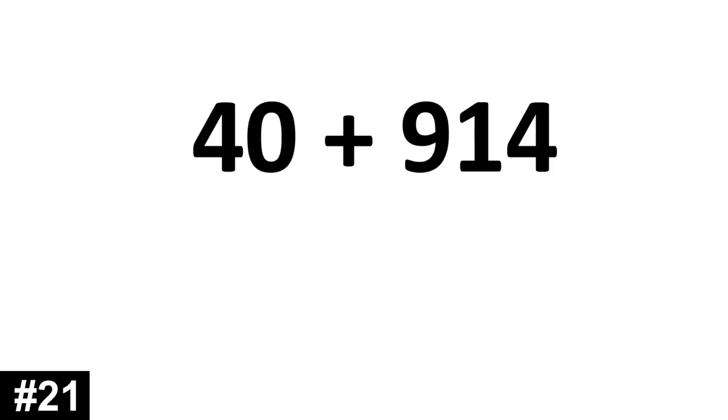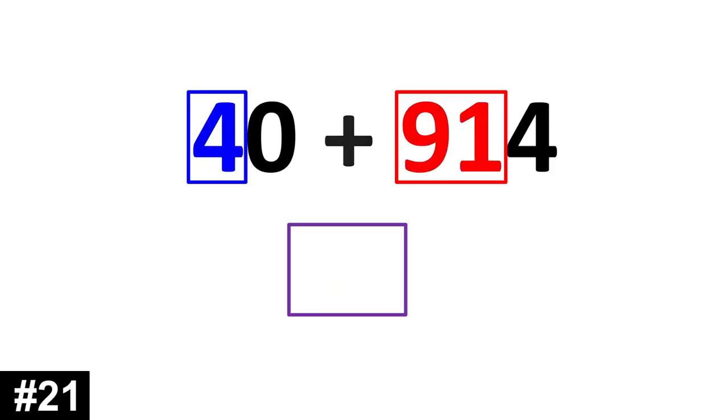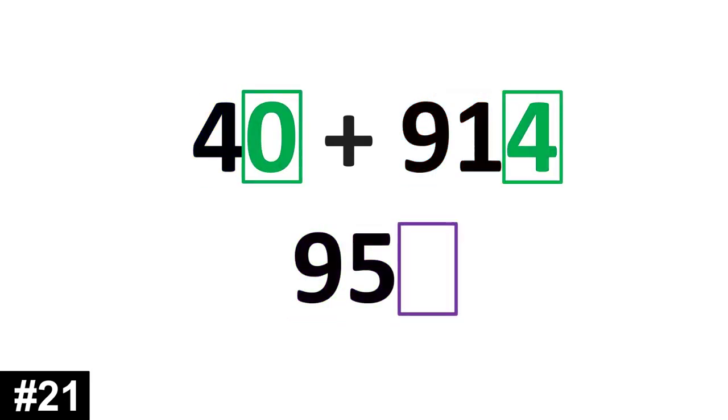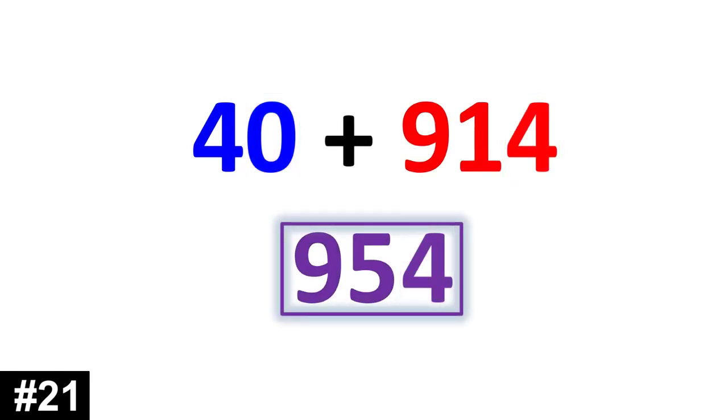40 plus 914. We add the 4 tens and the 91 tens. 4 plus 91 is 95. We look to the ones. 0 and 4 gives us 4. 954.